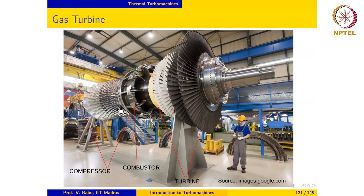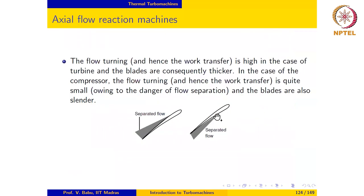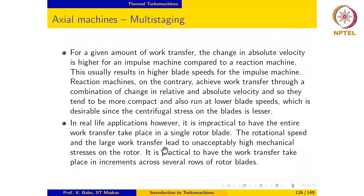Probably only one or two turbine stages drive the entire 12 to 15 compressor stages, while the remaining turbine stages convert combustion gas enthalpy into work to run the generator. By having multiple rotor blades, we can reduce work transfer in each rotor and consequently bring down rotational speed, which reduces mechanical stresses on the rotor. This is what is done in practical installations.